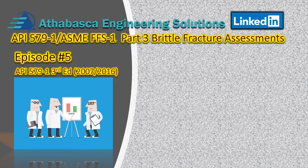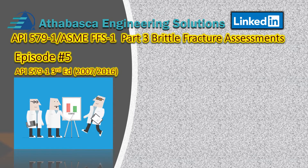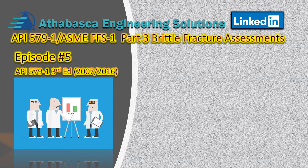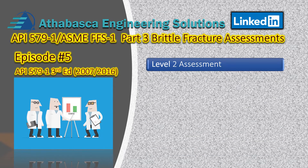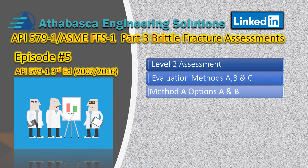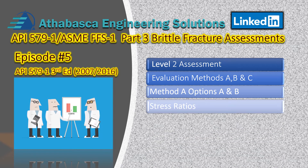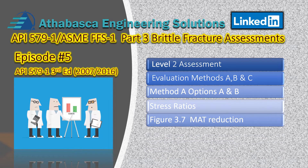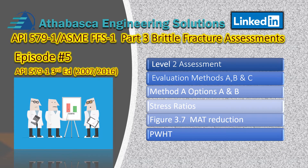Welcome back, folks. We're going to continue our journey through API 579.2, which is the example manual published in 2009, basically based on 2007, and this is a commentary for that. We're going to be looking at particularly level two assessments. Today we'll look at the evaluation methods called A, B, and C; method A with its two options A and B; the stress ratios; figure 3.7, which is the MAT reduction we can use; and post-weld heat treatment.